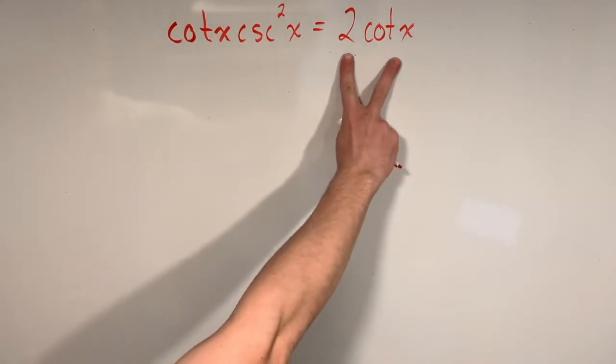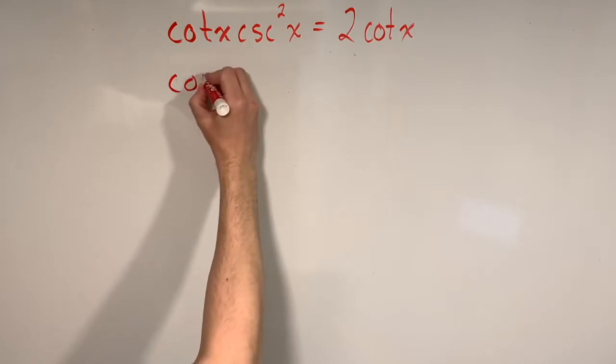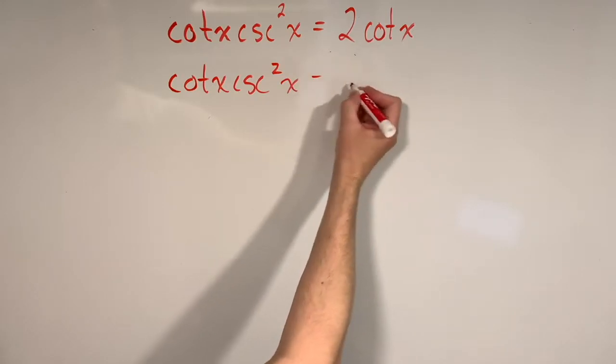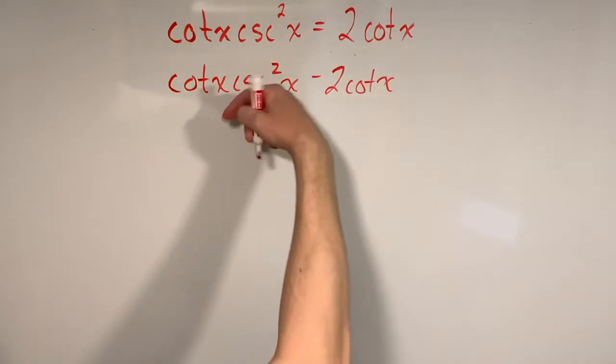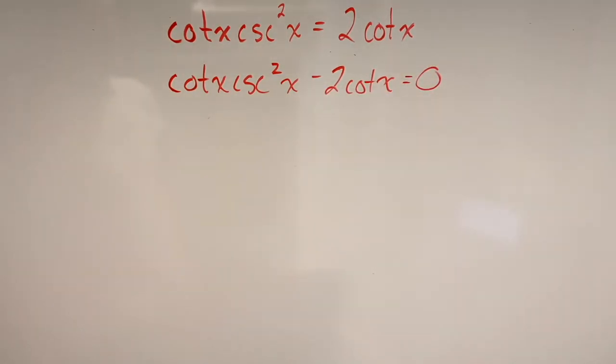And that step is we're going to take this 2 cotangent of x and we're going to bring it over to the left-hand side of the equation. The reason we do that is because trig equations are always easier to solve when they are equal to zero. So we're going to do that by bringing the 2 cotangent x over to the other side by subtracting, and you'll see that we're now left with an equation that's equal to zero.